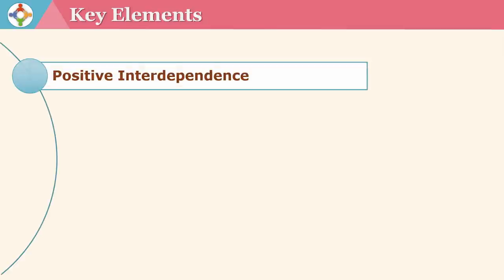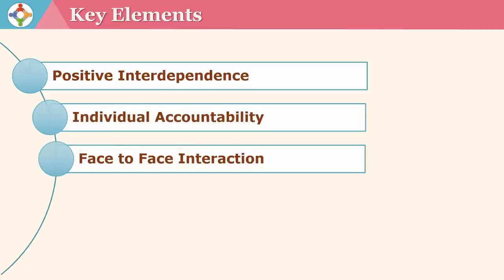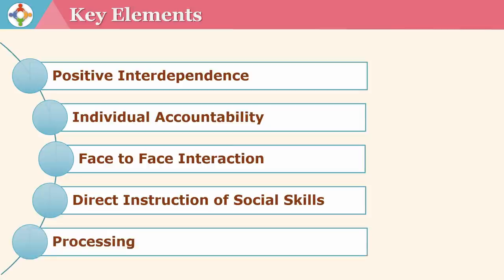While structuring a cooperative learning environment, there are five key elements that are essential: positive interdependence, individual accountability, face-to-face interaction, direct instruction of social skills, and processing. Let's have a look at these one by one.